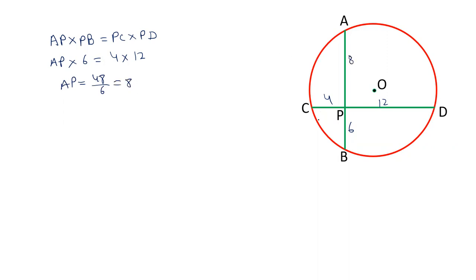So, this line is 8. Now, we can find out the length of the chord. AB will be AP plus PB. AB, that is 8 plus 6, is 14.